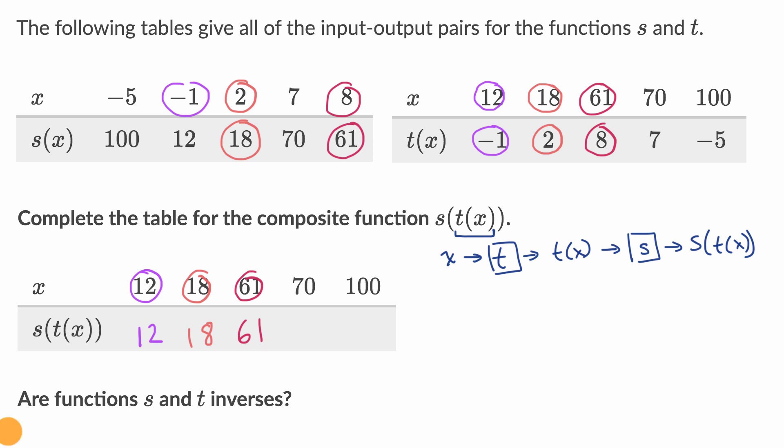And I'm running out of colors. I'll do green. So when we take 70 and we input it into t, t of 70 is seven. When you take seven and input it into s, you get 70.